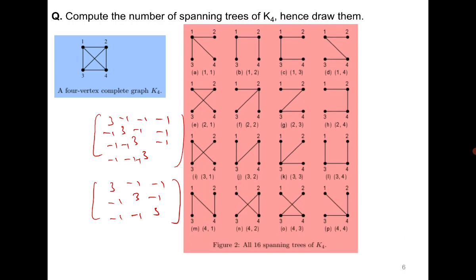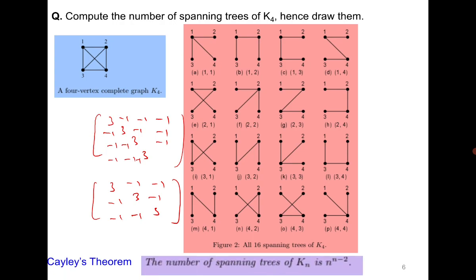So there are 16 spanning trees of K4. This leads us to Cayley's formula, which states that the number of spanning trees of Kn is n raised to the power n minus 2. For K4, n equals 4, so 4 raised to the power 2 equals 16. The proof is algebraic using matrices.